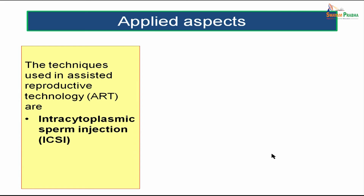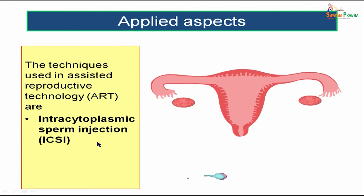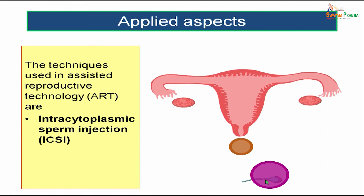Another technique used in assisted reproductive technology is intracytoplasmic sperm injection, or ICSI. In this process, we actually inject the sperm into the cytoplasm of the ovum. That process is known as intracytoplasmic sperm injection, and the zygote or embryo is again transferred into the uterine cavity.